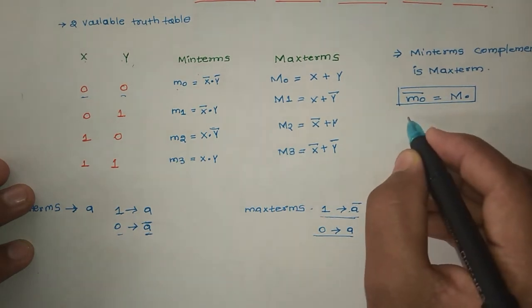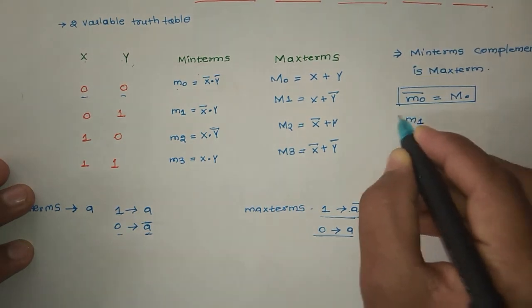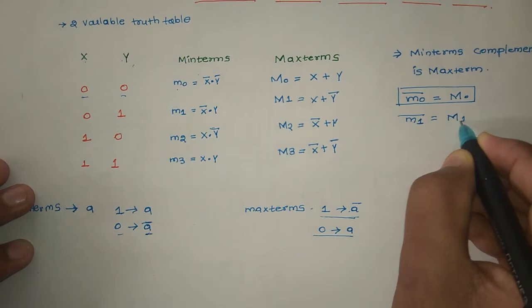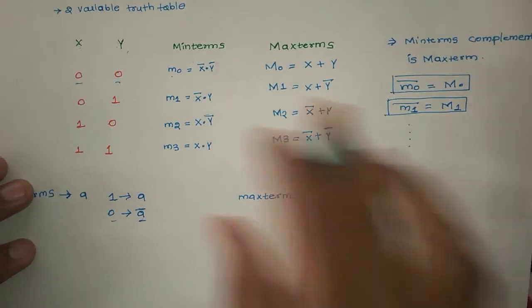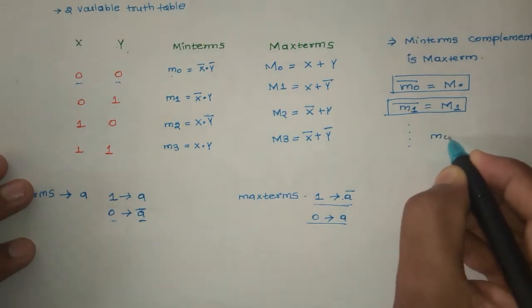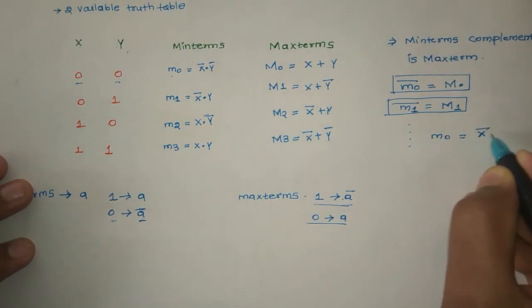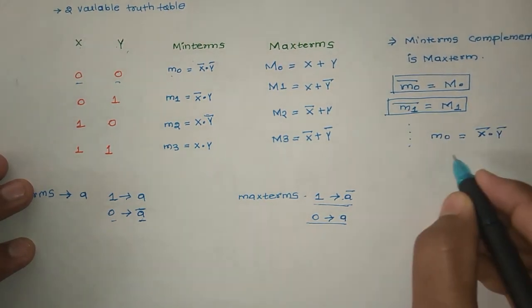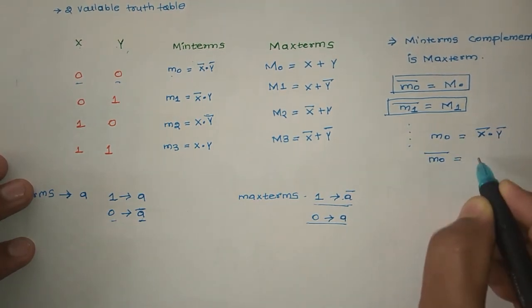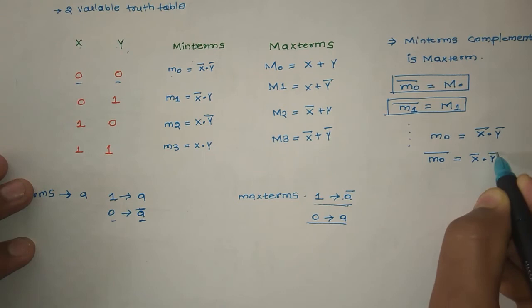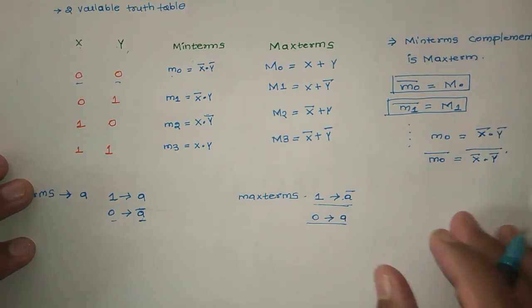Similarly, m1 complement capital M1, and so on. So m0 equal to X bar dot Y bar. Both sides complement: m0 complement equal to X bar dot Y bar whole complement.